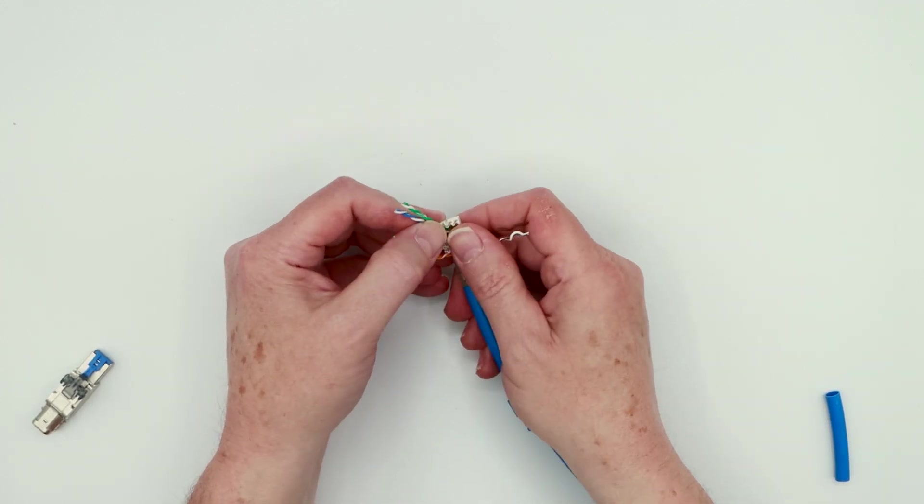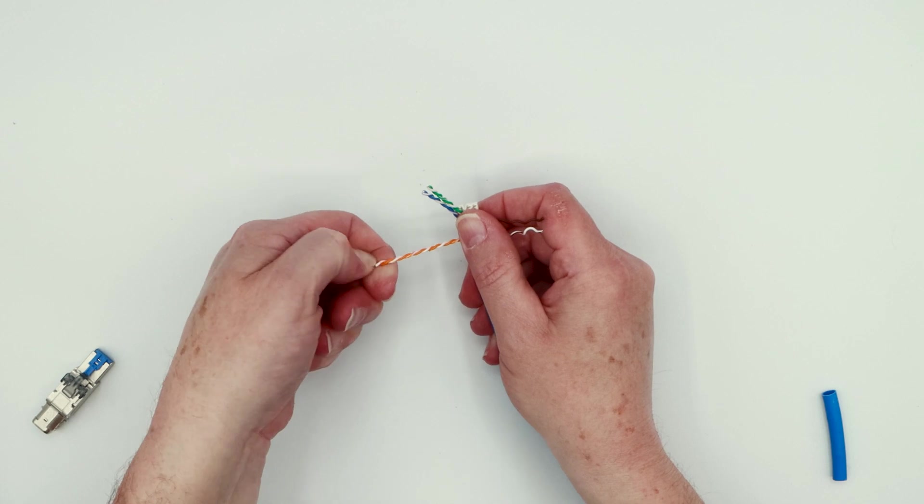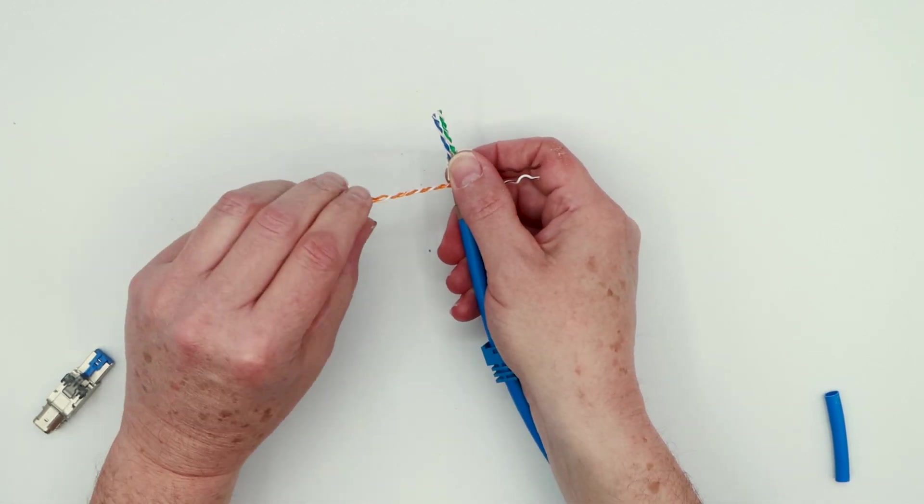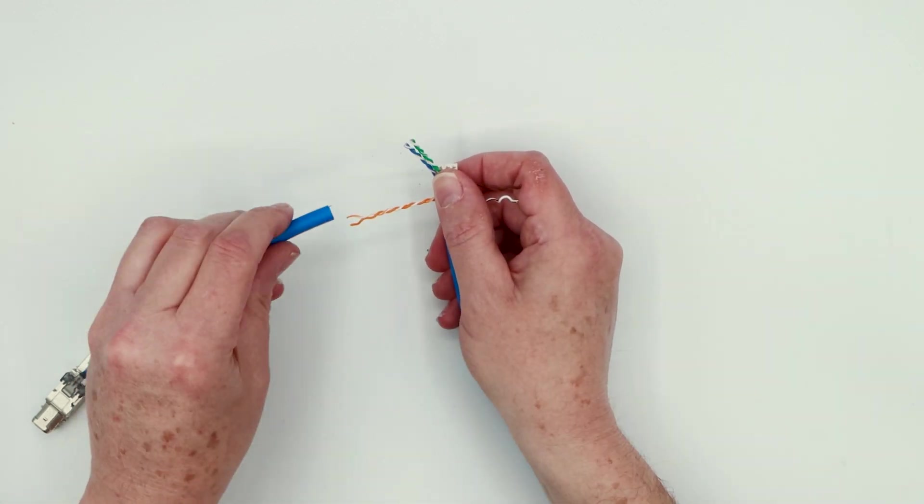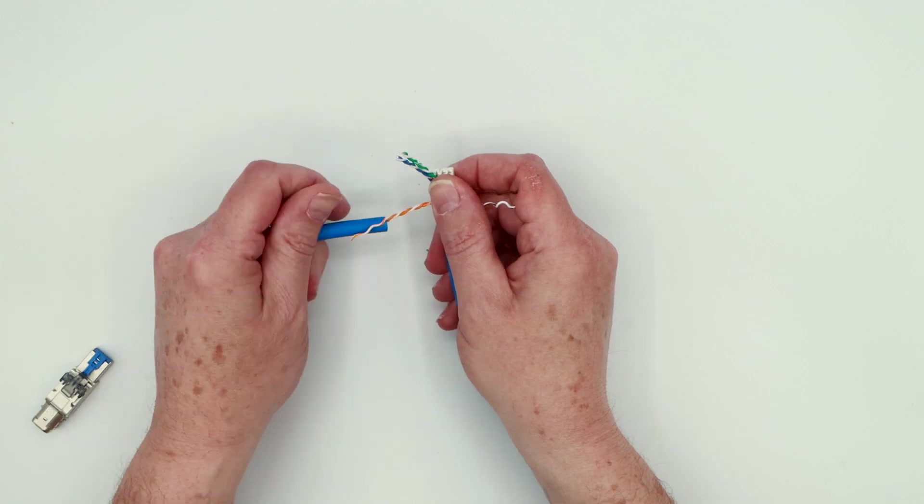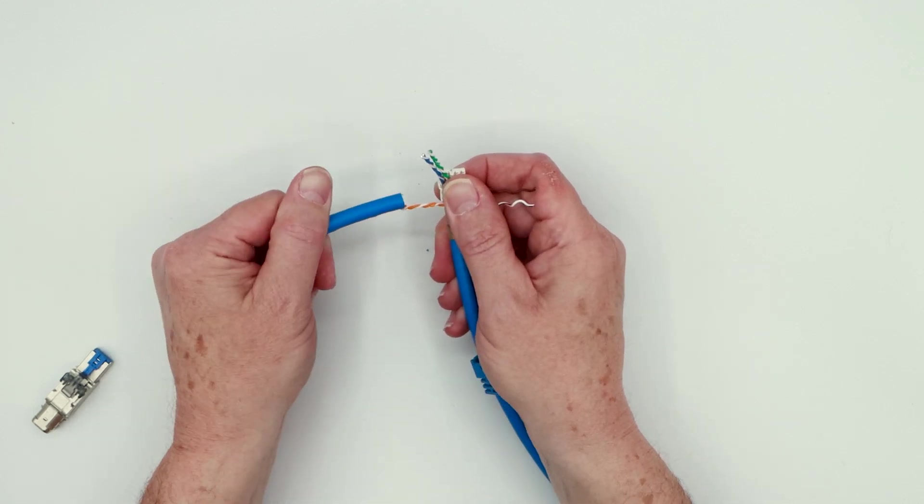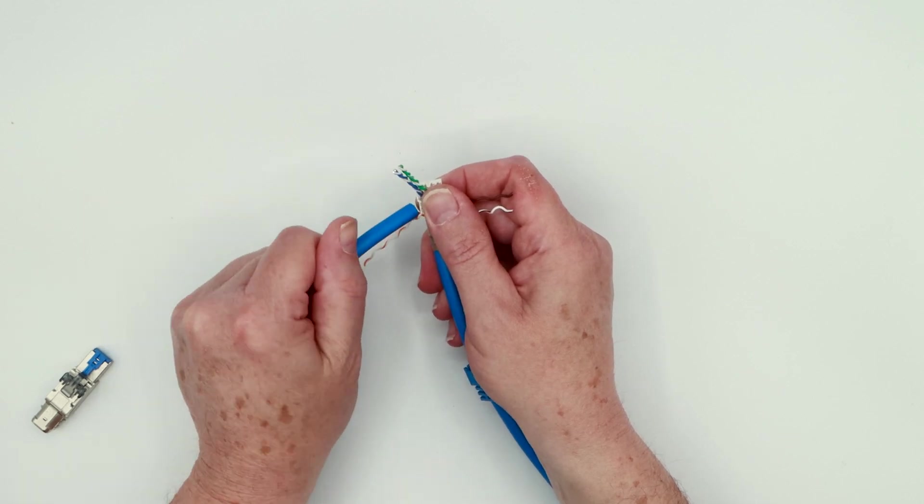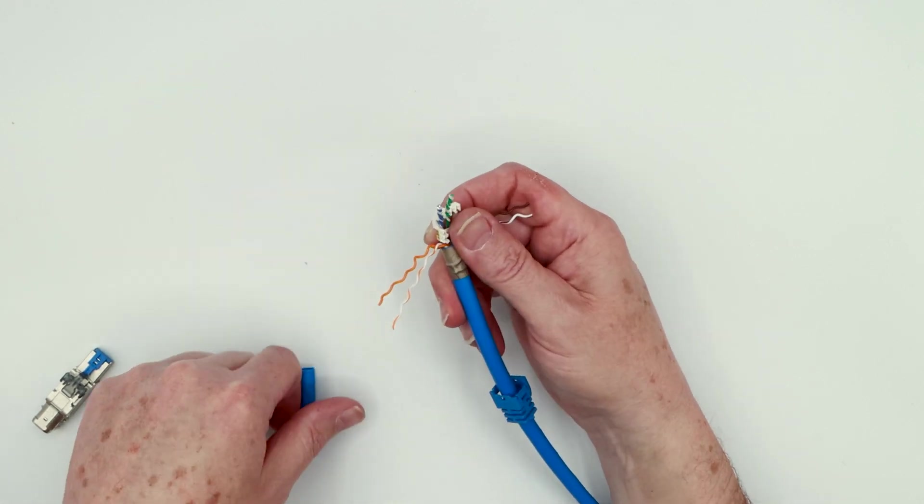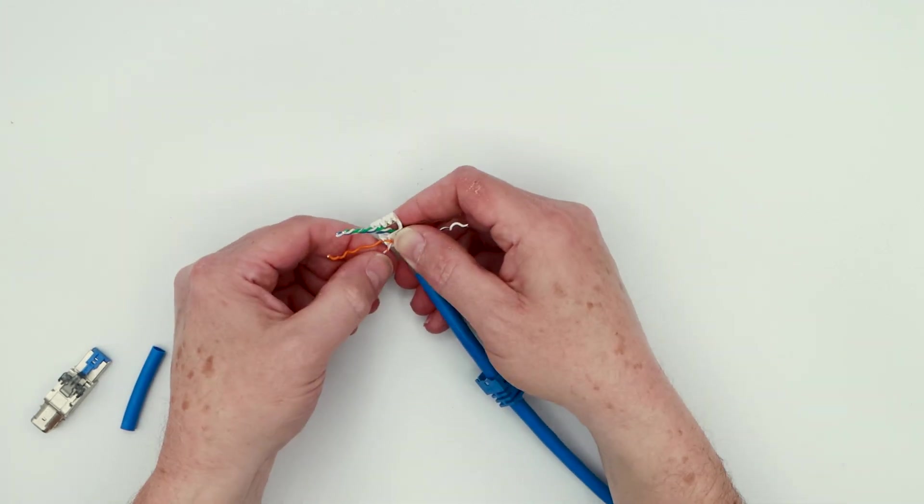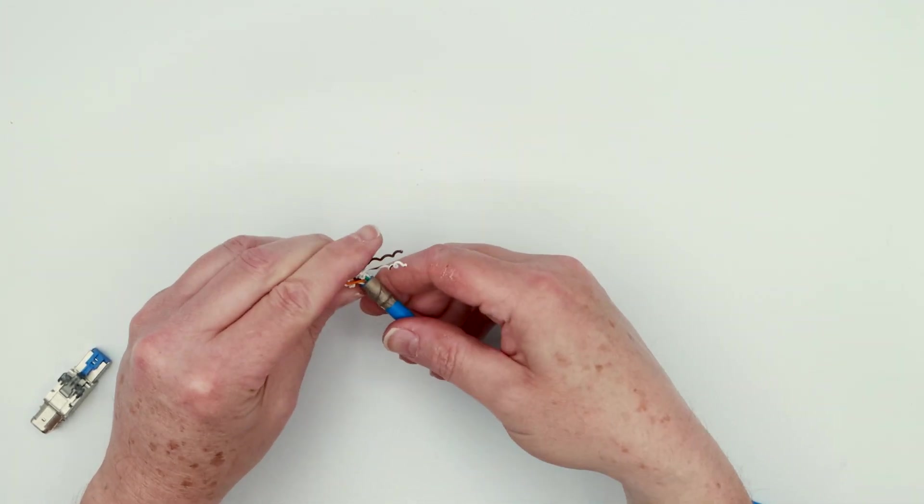And then you have your brown going there. On the other side, we're going to untwist this orange. Let me get it started. Again, this is really tight Cat 6A, so it's not easy to work with. And that's why a piece of cable jacket comes in so handy, because you can use that to untwist these pairs without causing too much damage to your fingertips. All right. So in this case, it's striped orange, then orange. So orange, striped orange.